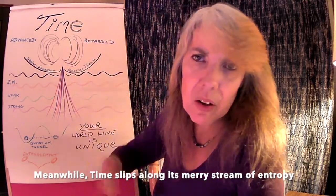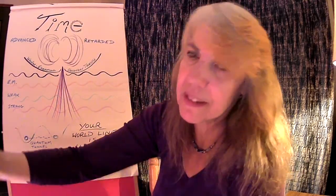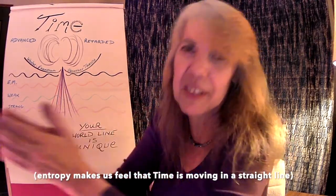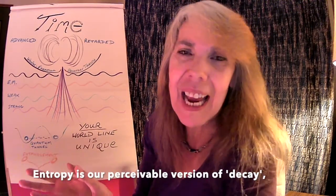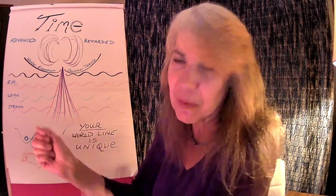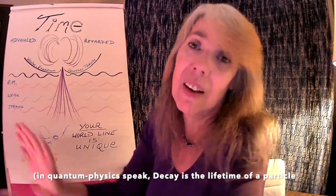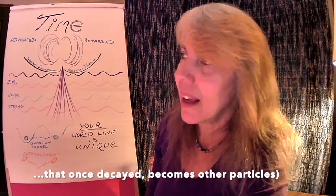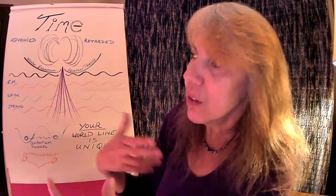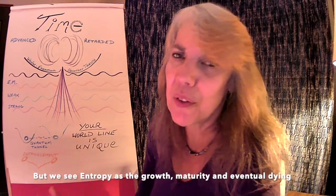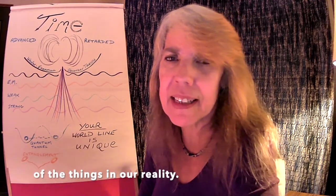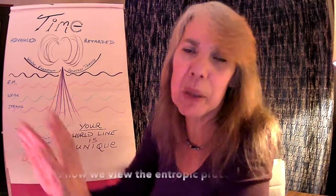So time just zips through the slot and allows us to carry on with our sense of entropy, because it's entropy that makes us feel like time moves in an arrow format. Entropy essentially is our version of decay. When particles come together and then produce other particles, that essentially is what decay is. But we see decay as the ageing, the growth and development, and then the dying of something — that's how we view the entropic process.